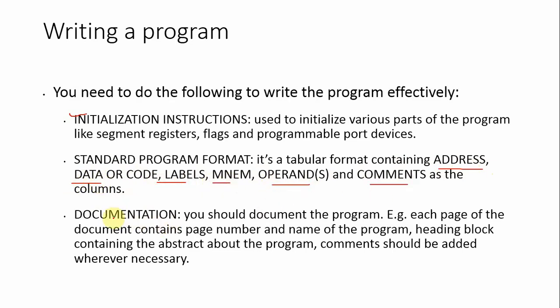The third step in writing a program is documentation. Documentation means you should document the program properly. Each page of the document should contain a page number and the name of the document, a heading block containing the abstract about the program, and comments should be added wherever necessary.